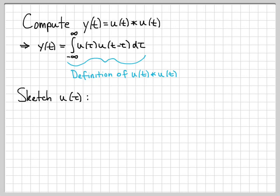If we sketch u of tau as a function of tau, the function u of tau turns on at time 0. So it's 0 for all negative tau and equal to 1 for all positive tau. This is the signal u of tau.